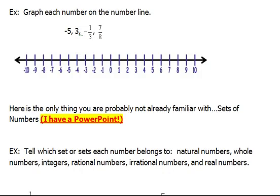This first one says graph each number on the number line. Well, our very first number is negative 5, and if we look at our number line, then we do have a spot for negative 5. So we would have to plot that in that position.